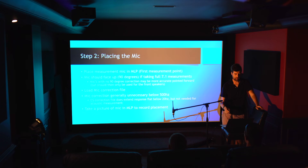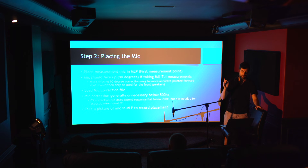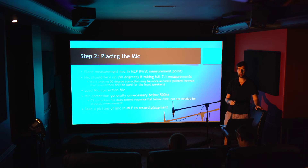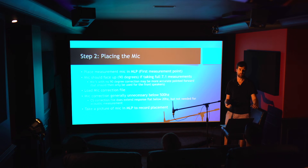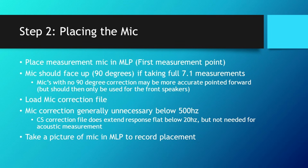Place the mic at the primary listening position, face it up, and make sure you've loaded the correction file for it. At low frequencies it's not a huge deal, but the correction file ensures it's basically flat to 20 Hz — and if you have the Cross Spectrum one, it makes sure it's flat to below 20 Hz. The mic corrections are not all that important below 500 Hz; these capsules are actually pretty flat and only get a little rough closer to 5 kHz.